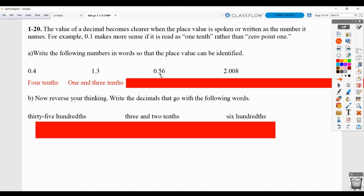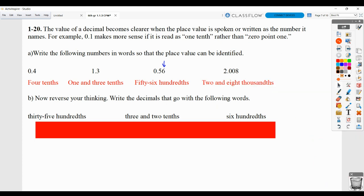Here we have 56, and the last digit is in the hundredths place. We always look at where the last digit lands to look at place value behind the decimal point. So 56 and the last digit's in the hundredths place. So 56 hundredths. Here we have two and for the decimal point, and then the eight is in the thousandths place. So two and eight thousandths.